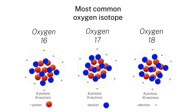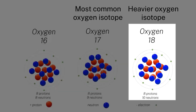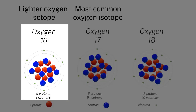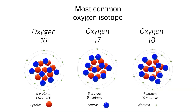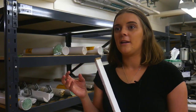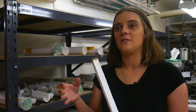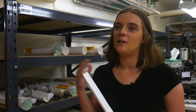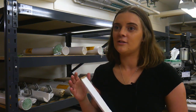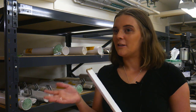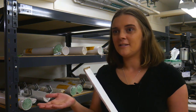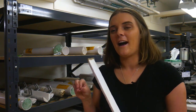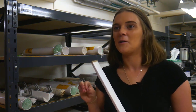Oxygen has two isotopes: a heavy isotope, which is oxygen-18, and a lighter isotope, oxygen-16. When evaporation occurs, it evaporates off that lighter oxygen isotope preferentially first, and leaves the heavier isotope in that water column.